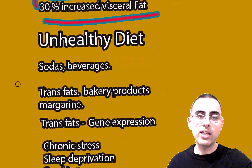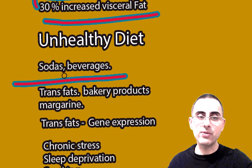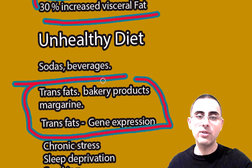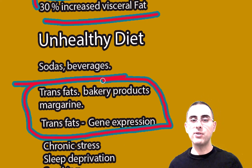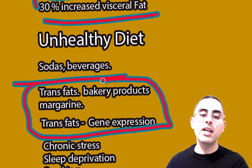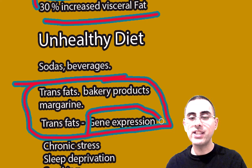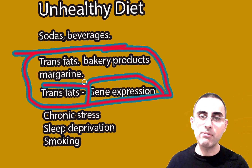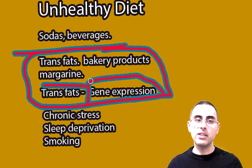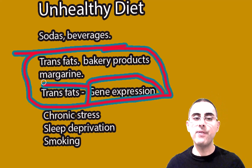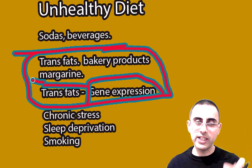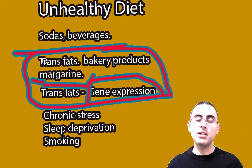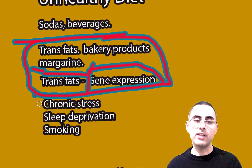Genetics plays an important role too — specific genes can increase visceral fat deposition by up to 50%. Physical inactivity causes a 30% increase in visceral fat deposition. Unhealthy diet, sugary beverages, and sweet drinks are also important risk factors. Trans fats are an independent and strong risk factor because they are directly correlated with visceral fat — they even stimulate gene expression responsible for fat deposition in the abdomen. Trans fats are found in margarine, most bakery products, many chocolates, and many ice creams.